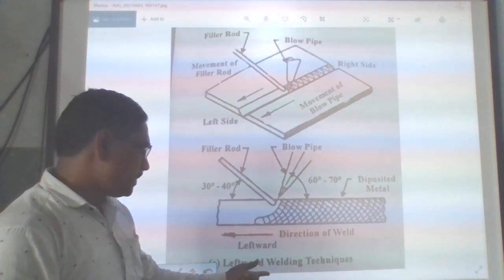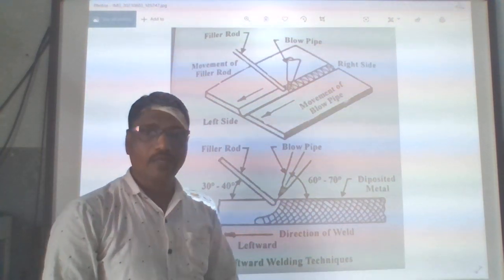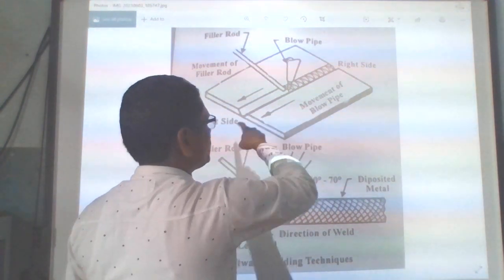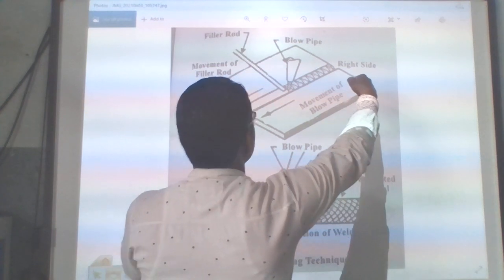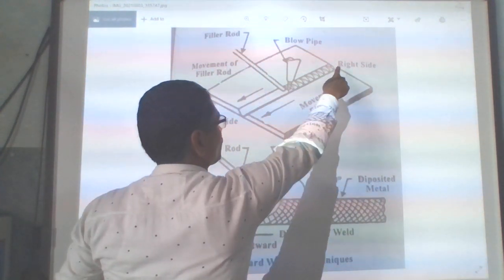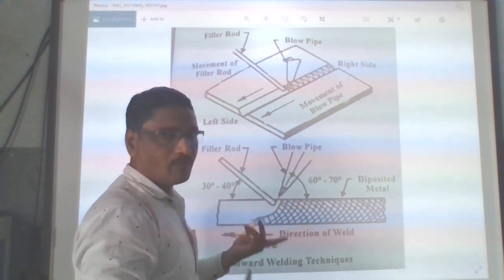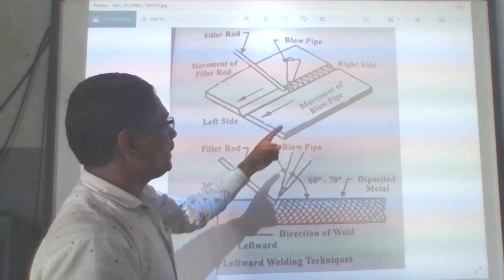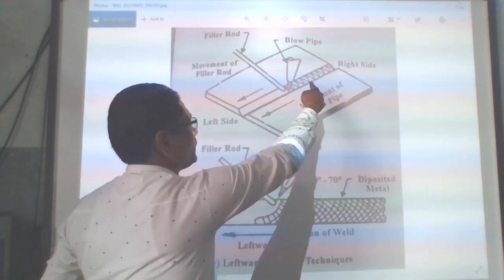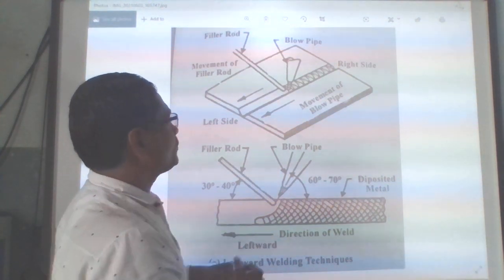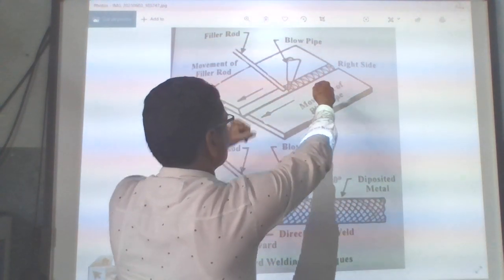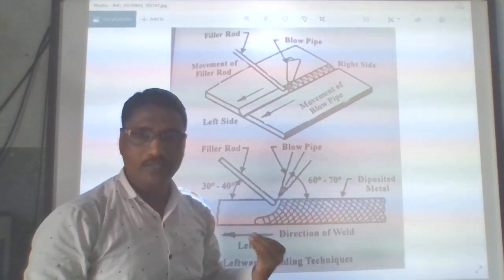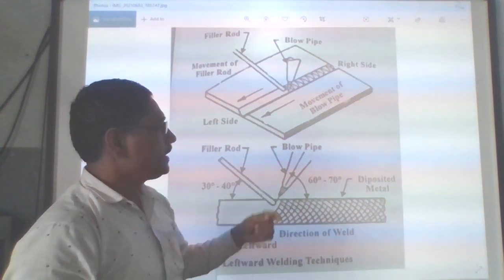The first thing is the leftward welding. This is the leftward forward technique. How do you do this? We need to build a pillar. This is the rightward technique. The second thing is the rightward technique. The movement of blow-pipe is the rightward technique. That's how you put a pillar and work to do.